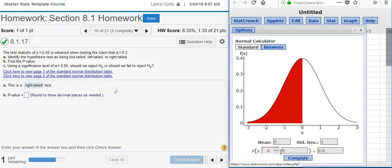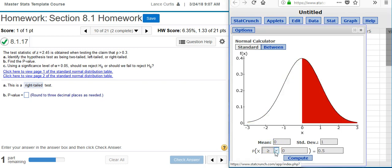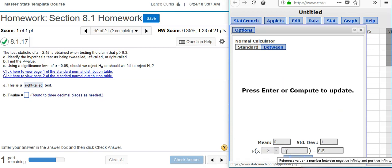I'm going to make sure that this inequality sign matches the test that I'm running. Part A, we concluded that we're doing a right-tailed test. So that means this inequality sign needs to be greater than or equal to. Here in the next field, I'm going to put the z-score that they give me. And now I press Compute.